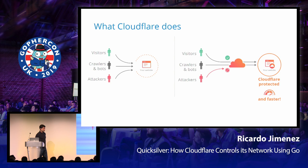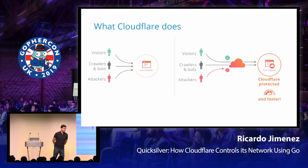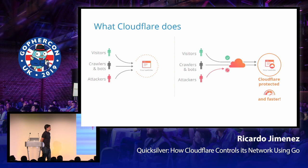In order to explain what kind of problem we had to solve at Cloudflare, first I need to explain very briefly what Cloudflare does. Every person who runs a website knows that usually you have well-behaved visitors who just want to check your content and use your service. But there are also systems — crawlers from search engines that index your content, and good bots that interact with your APIs.